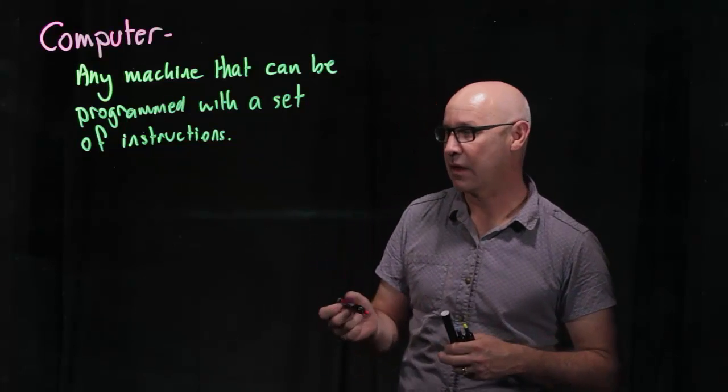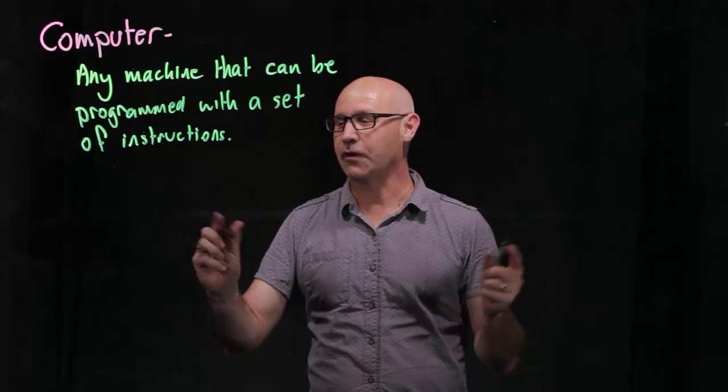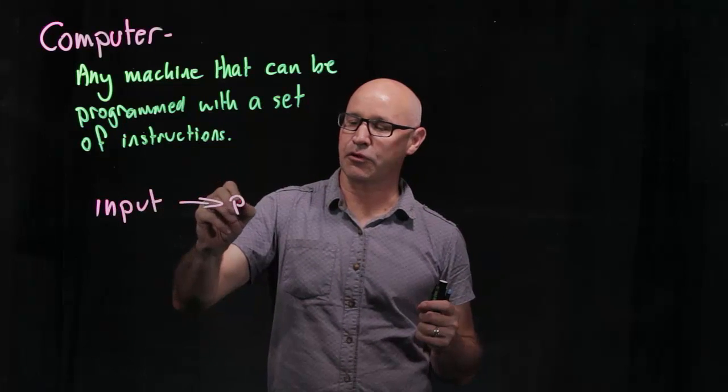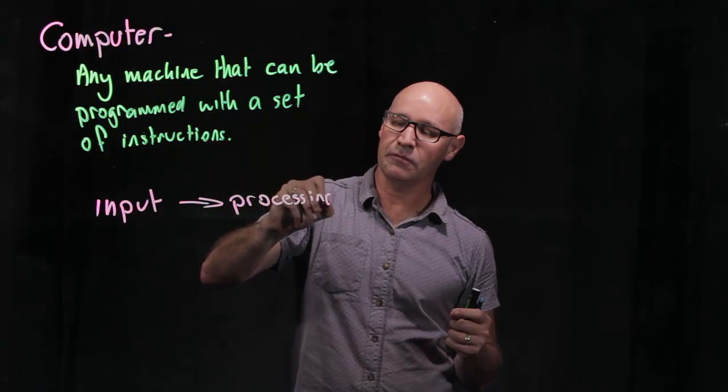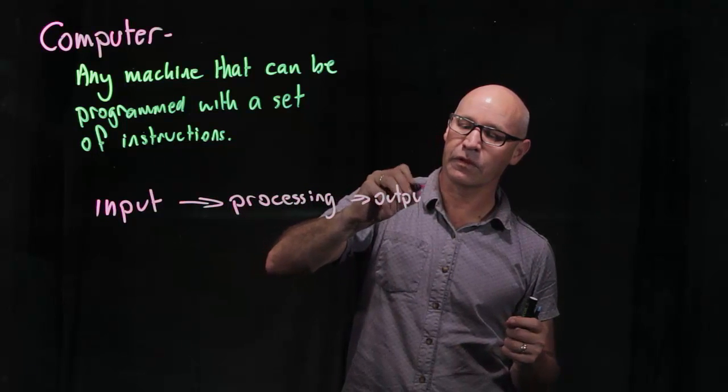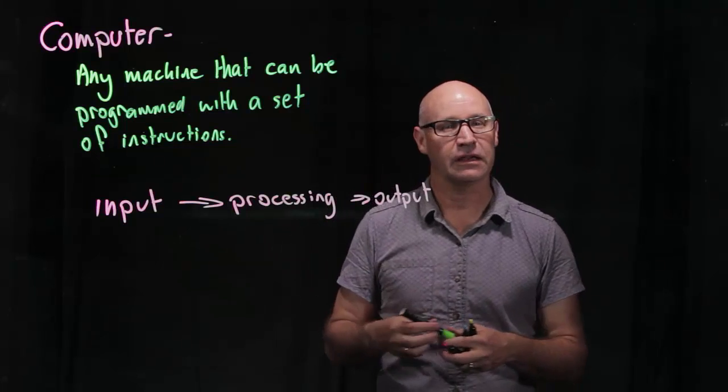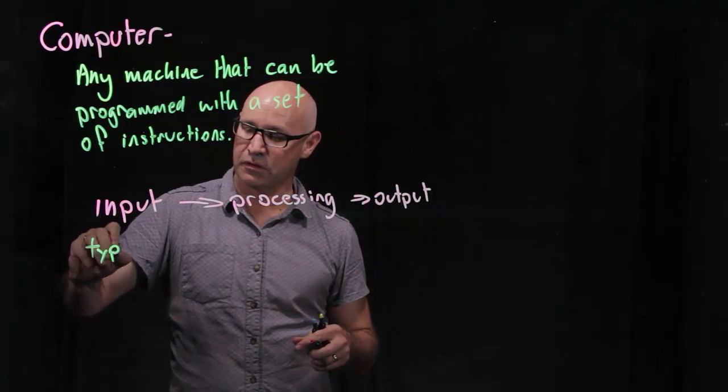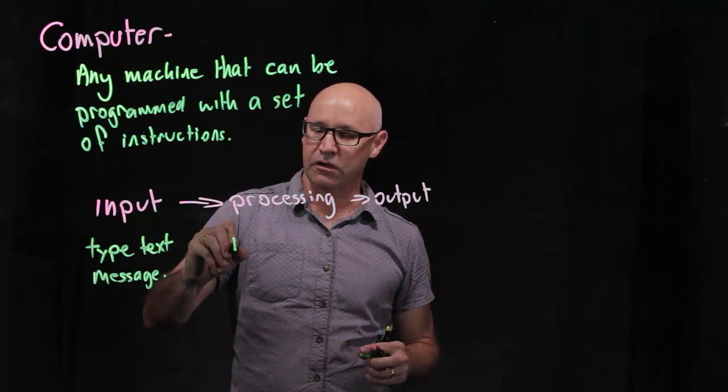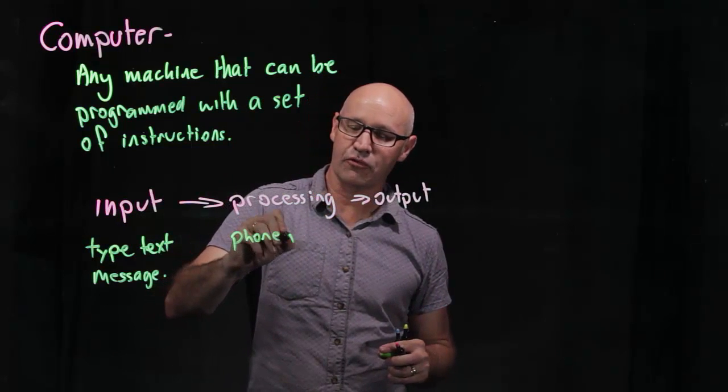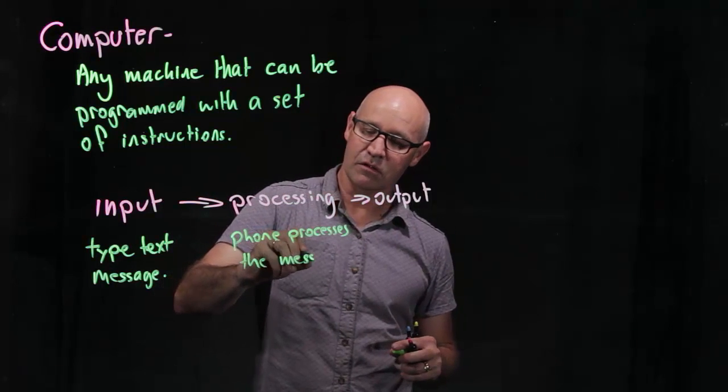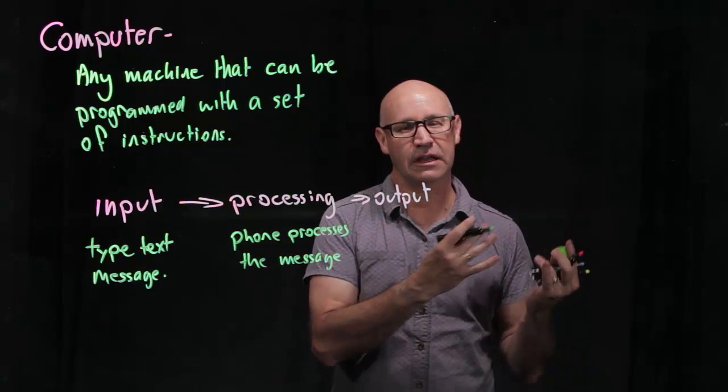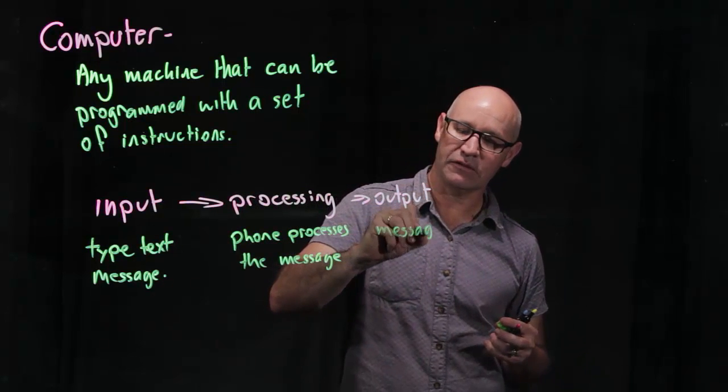Your phone, for example, is a device that takes an input and then processing and then we have an output. So if we're sending a text message, you type the text message in your phone. The phone processes the message and the output then is the message that gets sent and gets received by another user.